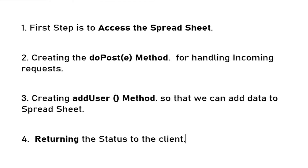The first step is to access the spreadsheet in the code. The second step is to create a doPost method for handling the incoming request. The third step is to create an addUser method so that we can add data to the spreadsheet. And the fourth step is returning the status to the requester.